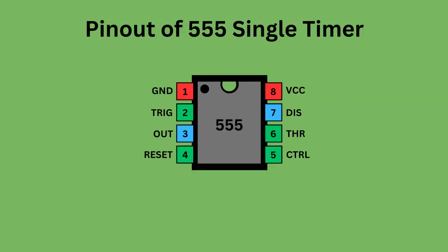The 555 timer IC comes with eight pins. There is a notch or a dot on the chip's body. Pin 1, located at the top left, serves as the ground or ground supply.